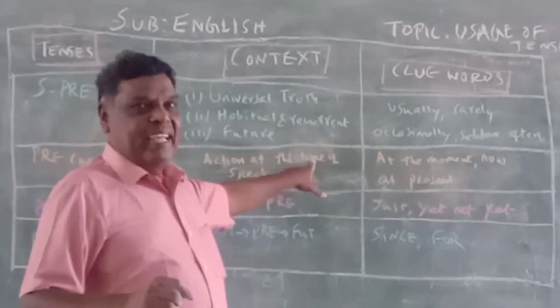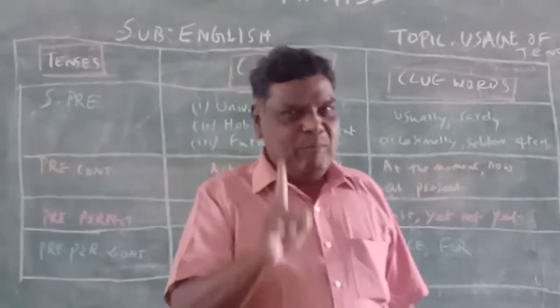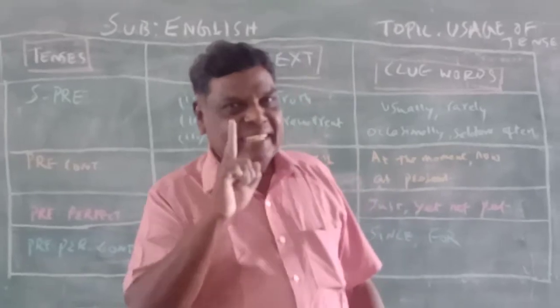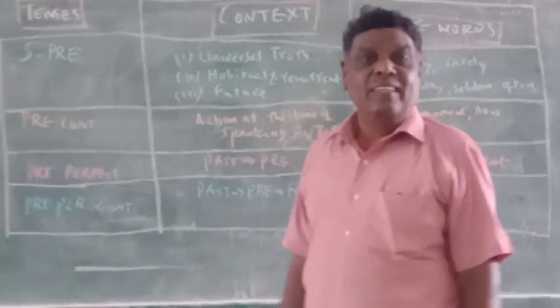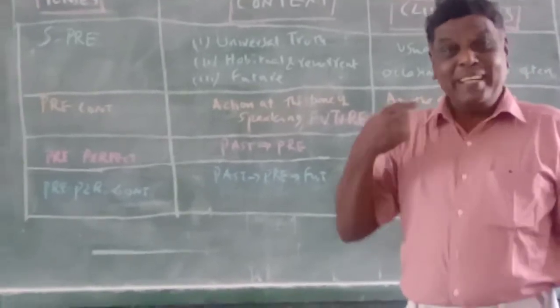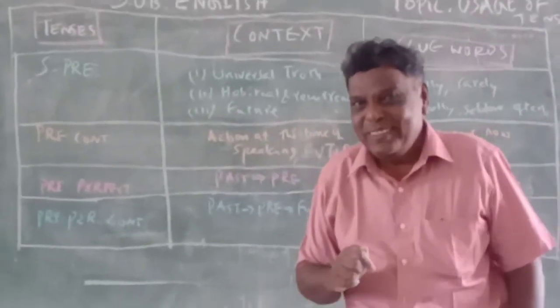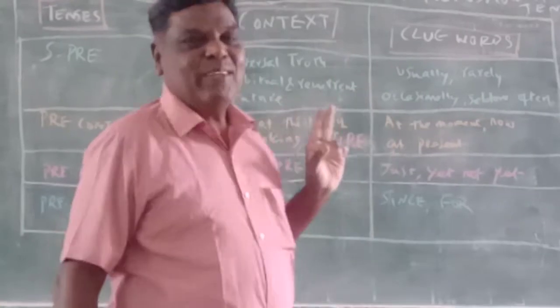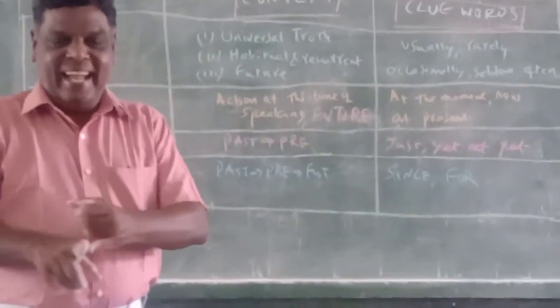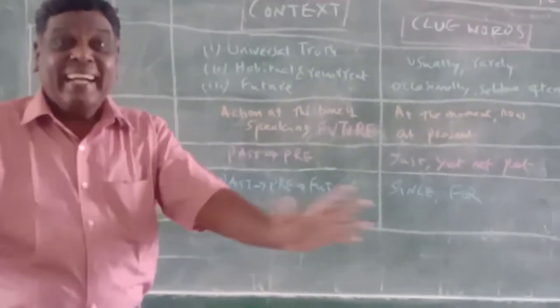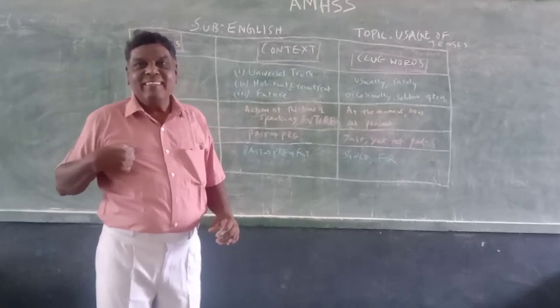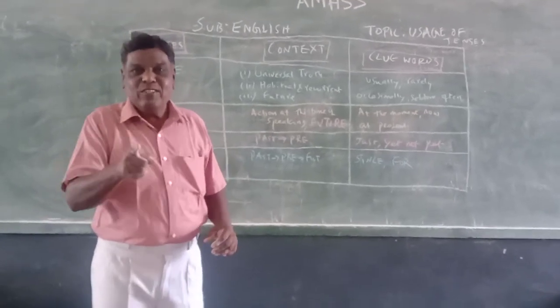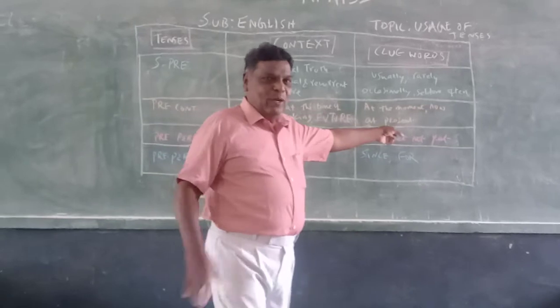So present continuous: action going on at the time of speaking, action currently happening, and also to indicate the future — my leader is arriving tomorrow. You can say 'my leader is arriving tomorrow.' These are all the contexts under which you can use present continuous tense.